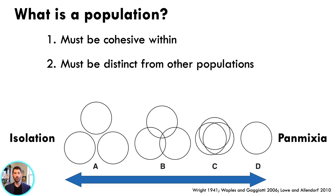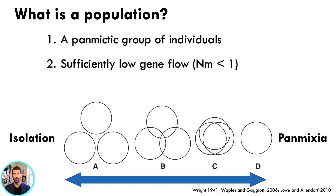It's important to define the word population. We're using it in a genetic sense, which might be confusing because it has many different colloquial definitions. Genetically — and this is not unique to human beings — there are two important components. A population must be cohesive within, and it must be distinct from other such populations. More technically, it must be a panmictic group of individuals, and it must have sufficiently low gene flow from other such populations.